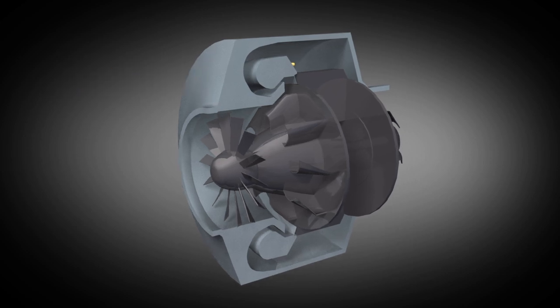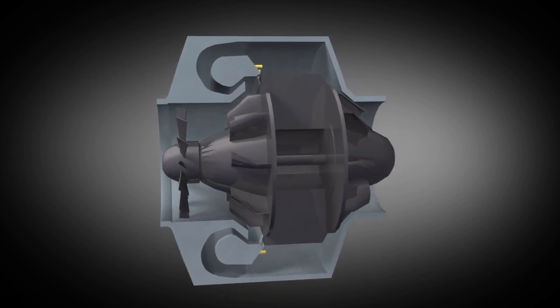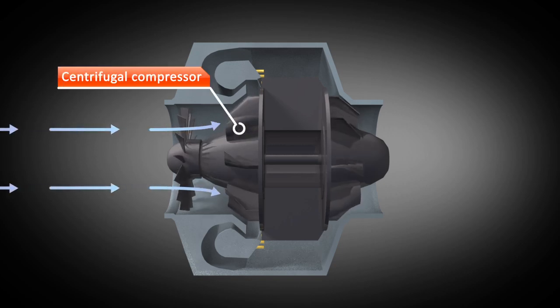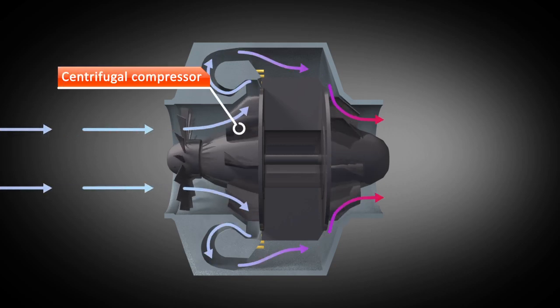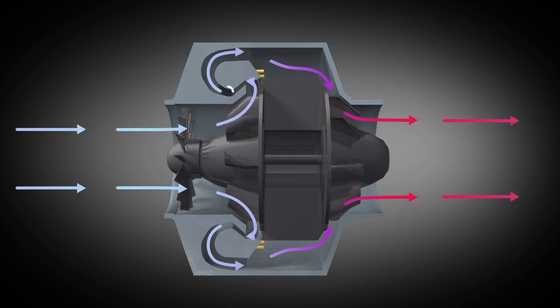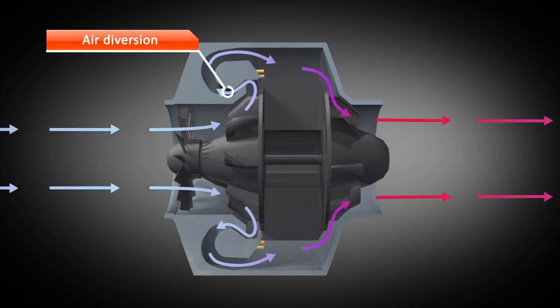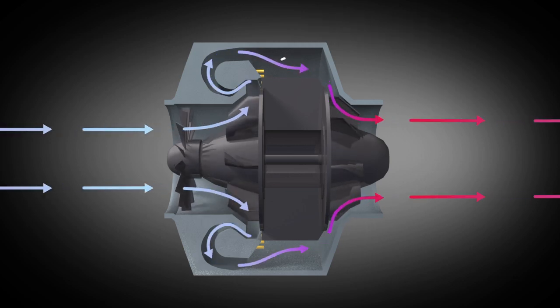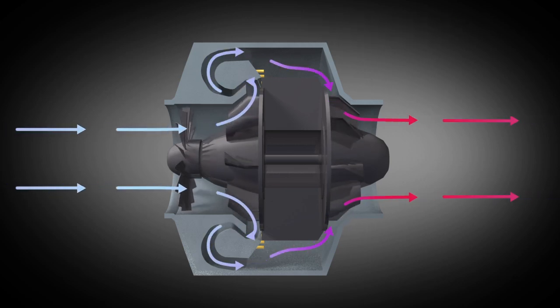First, the engine has an axial compressor, which compresses the air that flows parallel to the axle. A centrifugal compressor is placed behind it. It compresses the air to the outside. An air diversion is placed in line, making sure that the air flows in the right direction into the combustion chamber. The fuel is injected in the combustion chamber and burned.